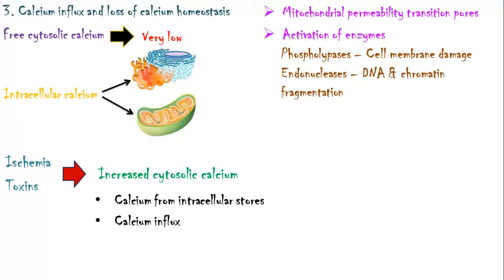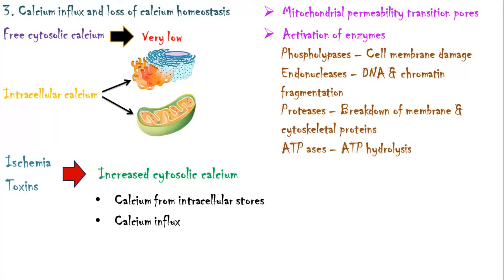Calcium also activates endonucleases, which cause DNA and chromatin fragmentation; proteases, which cause protein breakdown; and ATPases, which hydrolyse ATP. Additionally, calcium ions activate apoptotic proteins and enzymes and promote apoptosis.